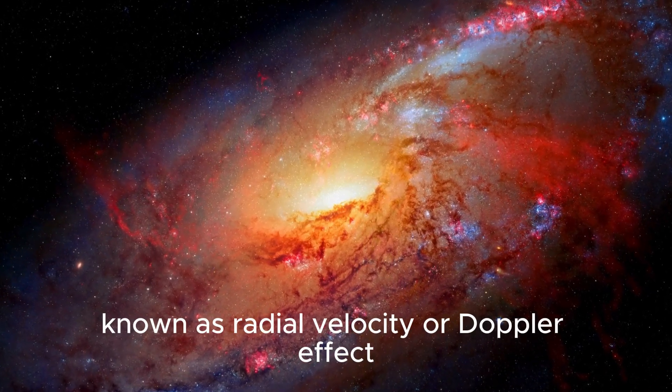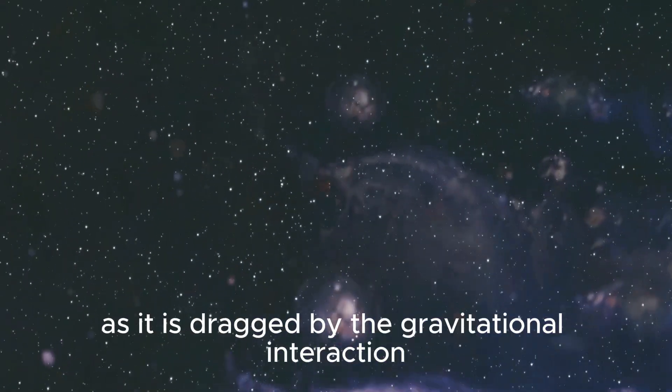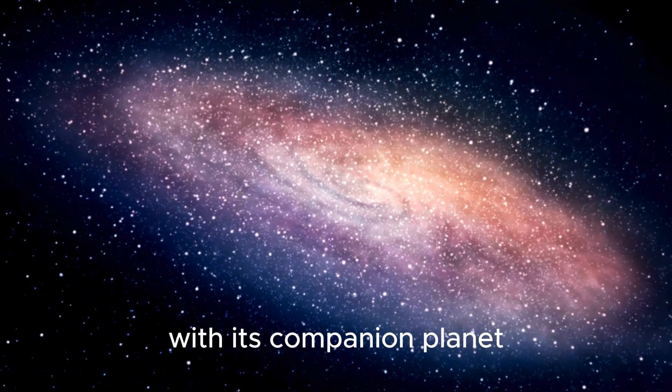These shifts, known as radial velocity or Doppler effect, occur due to the slight wobble of the star as it is dragged by the gravitational interaction with its companion planet.